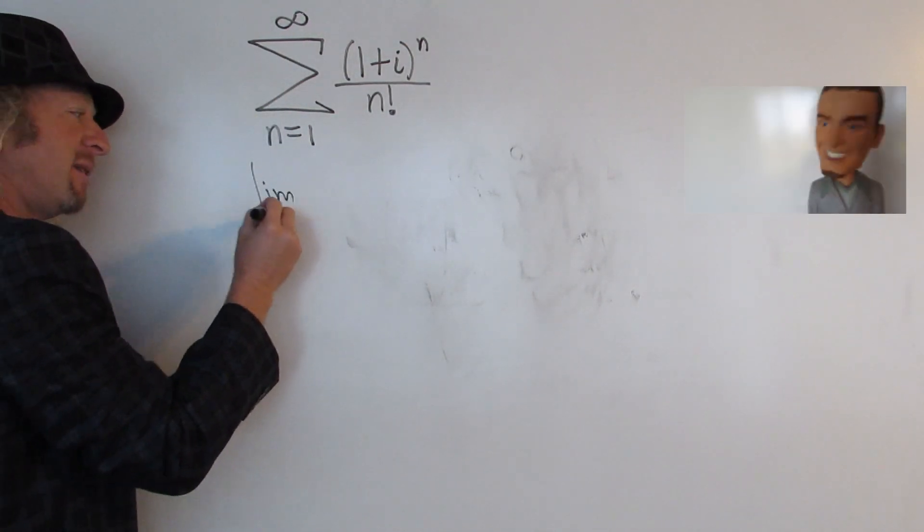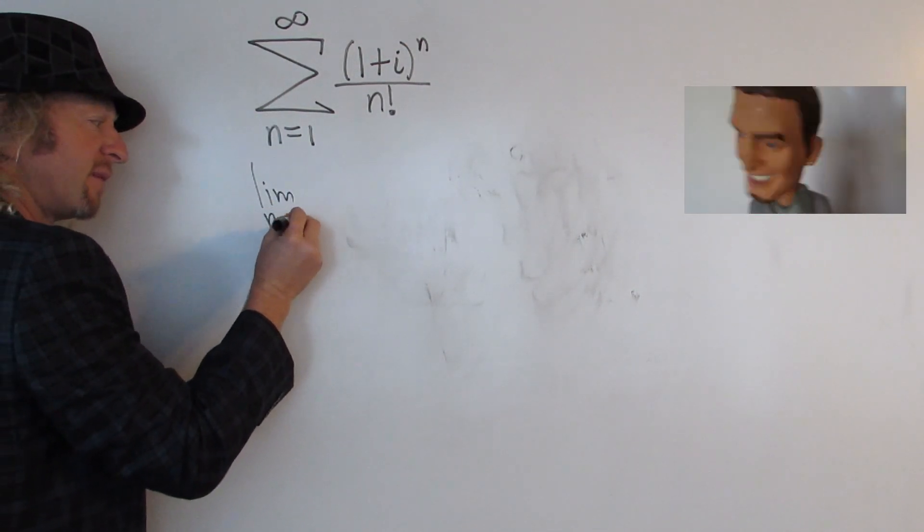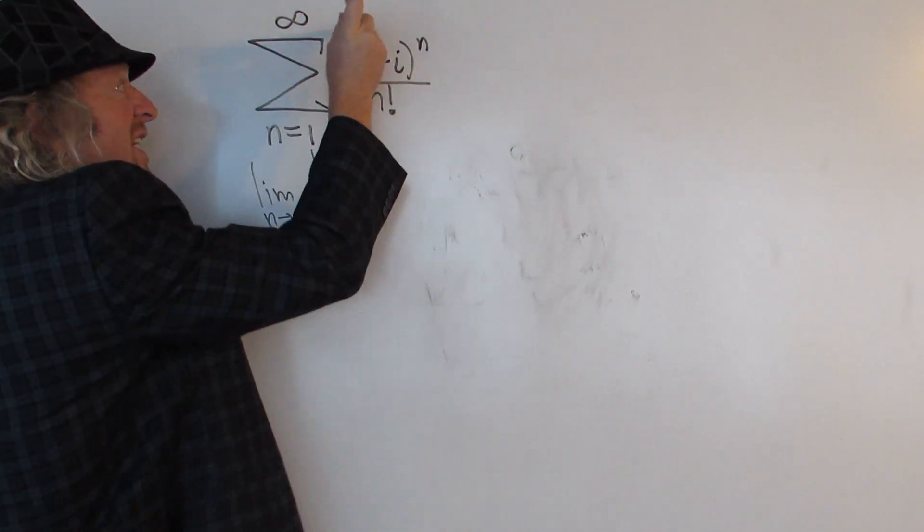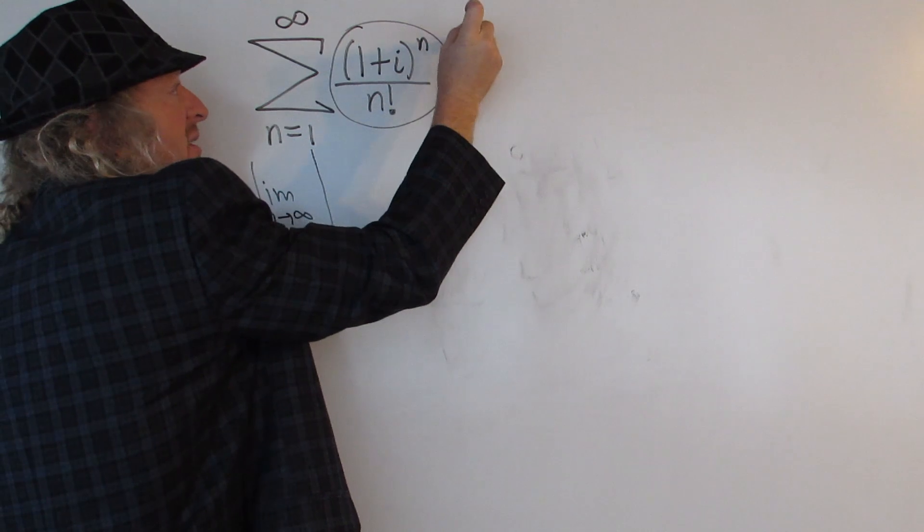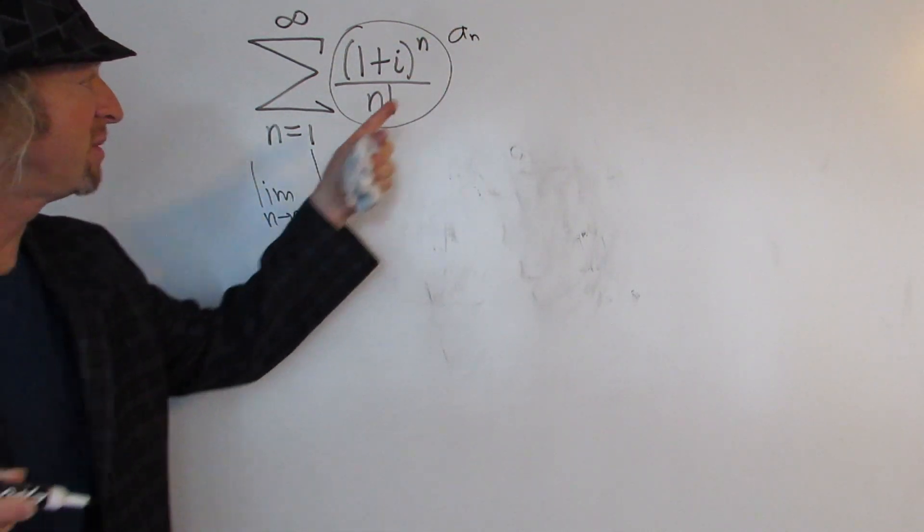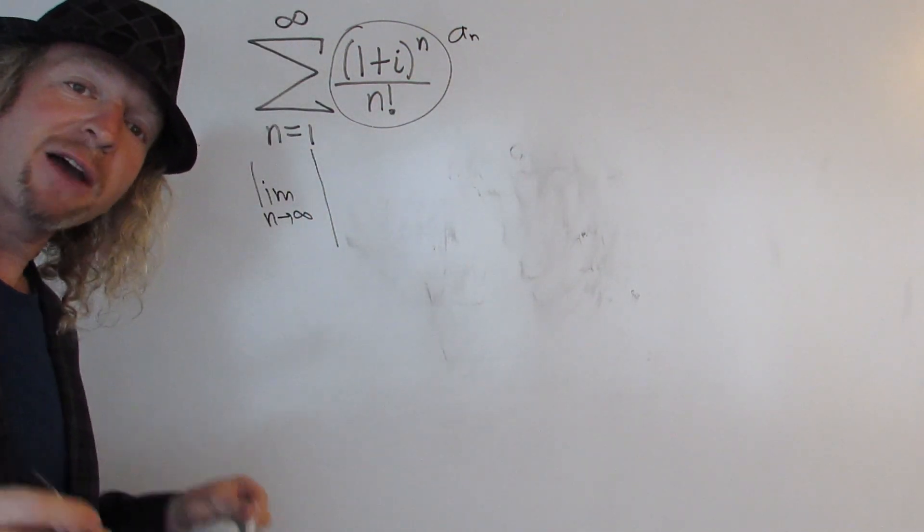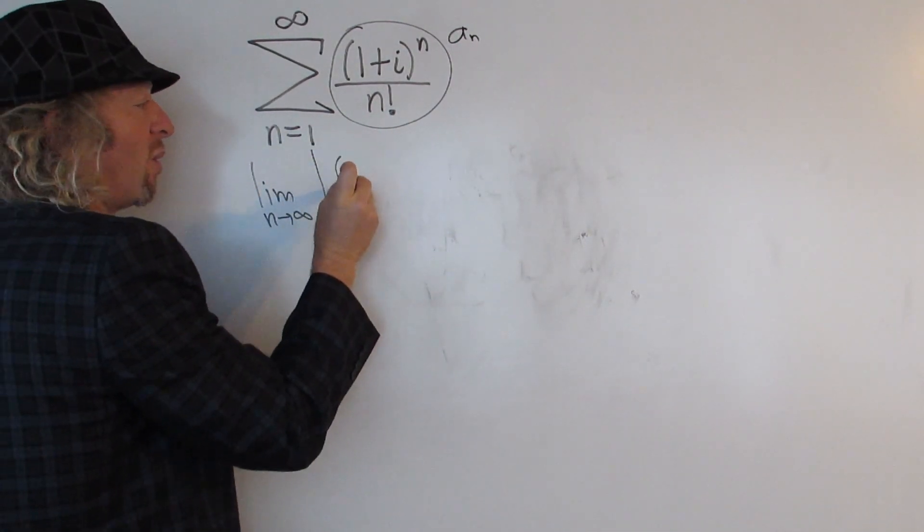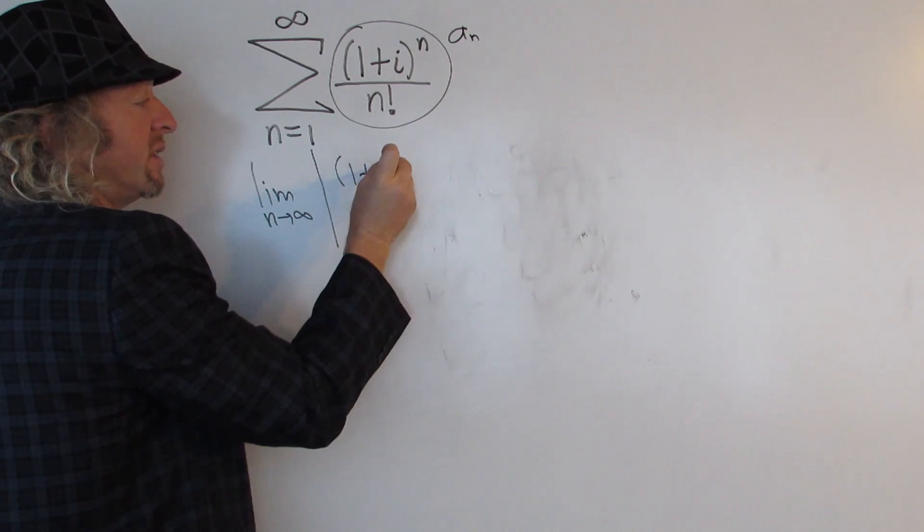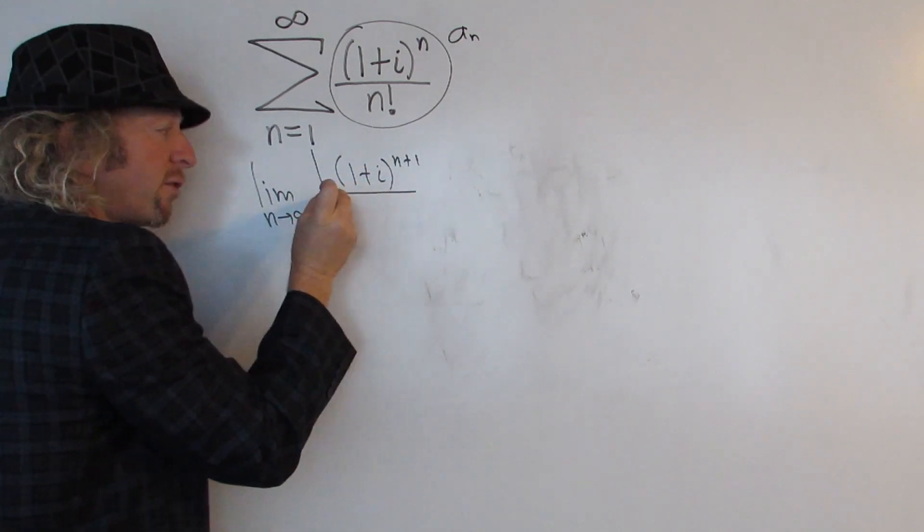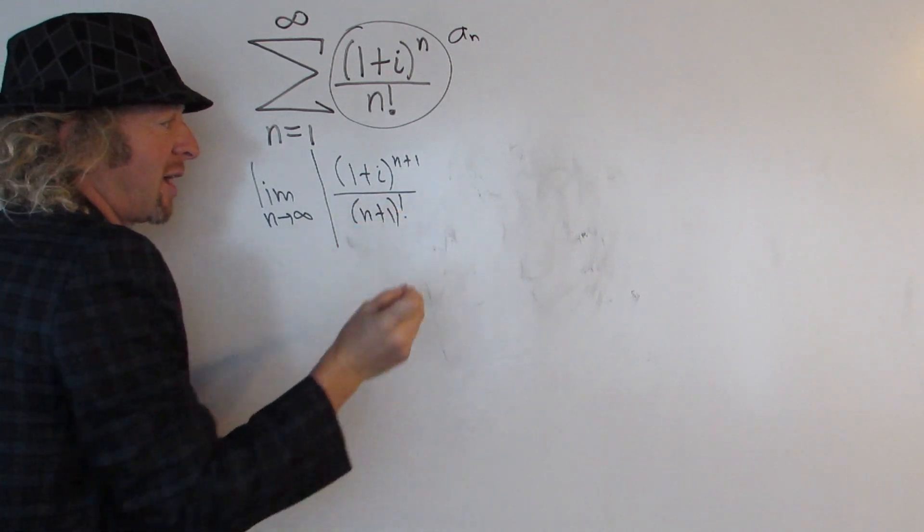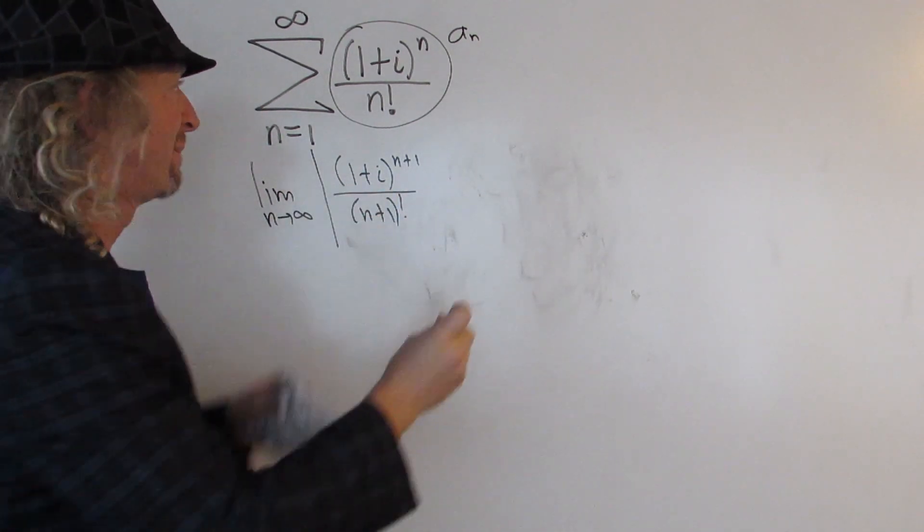All right, so let's start by taking the limit as n goes to infinity of the absolute value of this thing. So this is our a sub n, right? This is our a sub n. So first we have to compute a sub n plus 1. That means we have to replace all of the n's with n plus 1. So this is going to be (1 plus i) to the n plus 1 over (n plus 1) factorial, just replacing all of the n's with n plus 1. And this would be a sub n plus 1.